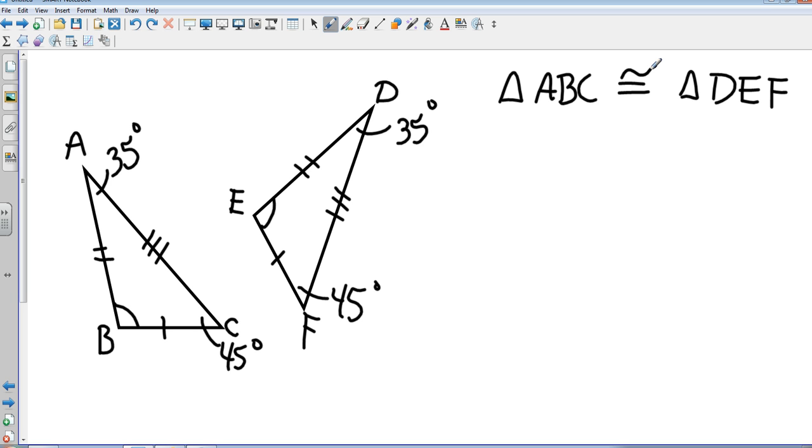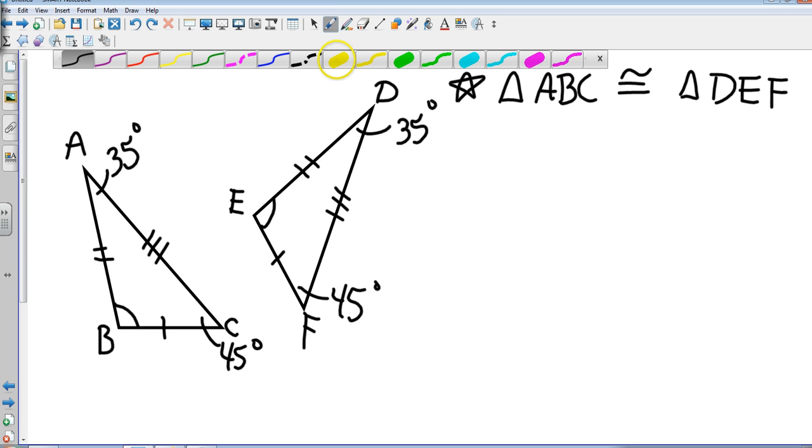Now crucial: the order is important when you label these. You can put this - this is good: triangle ABC is congruent to triangle DEF. Why? Because in order, A corresponds to angle D. Those are the two ones that are equal. B corresponds to angle E, and then at the end, C corresponds to F.